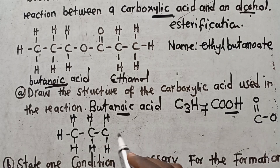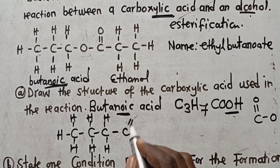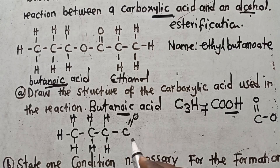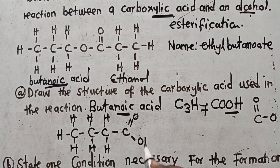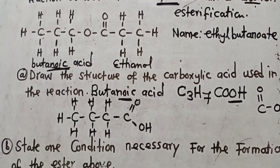Then I put a double bond there, and I put OH — I can write it like this, there is no problem. So this is butanoic acid. This is the structural formula for butanoic acid. This is what you need to know and understand.